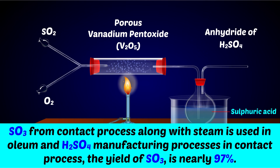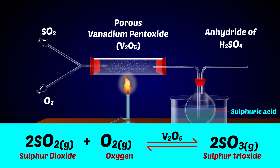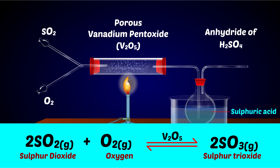The yield of sulphur trioxide is nearly 97%. Two parts of sulphur dioxide gas plus oxygen gas in a reversible reaction with V₂O₅ (vanadium pentoxide) as catalyst gives sulphur trioxide.